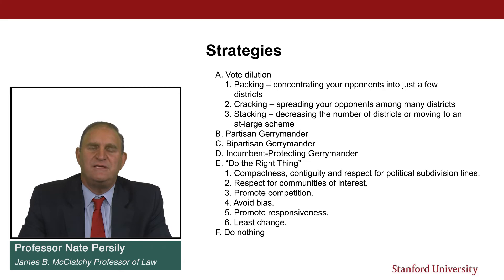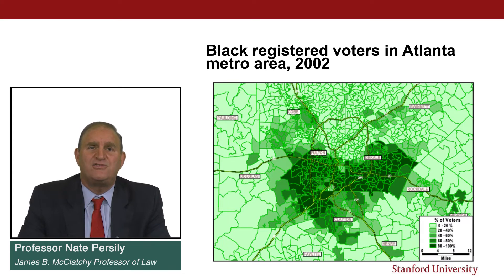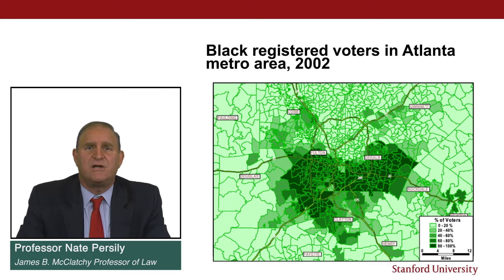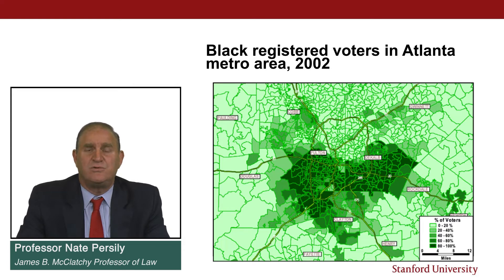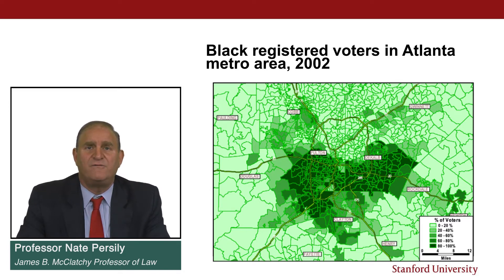To illustrate how packing and cracking work in practice, consider a map from 2002 — a racial map of Fulton and DeKalb County, the area around Atlanta, Georgia. In this map, very dark green areas have close to 80 to 100 percent African-American concentration in those precincts, while much lighter green areas have zero to 20 percent. How you draw lines in a city like this will often determine whether you have majority Black voters or majority white voters in a district. Under conditions of racial polarization, the redistricting process will often be dispositive in determining which community has representation.